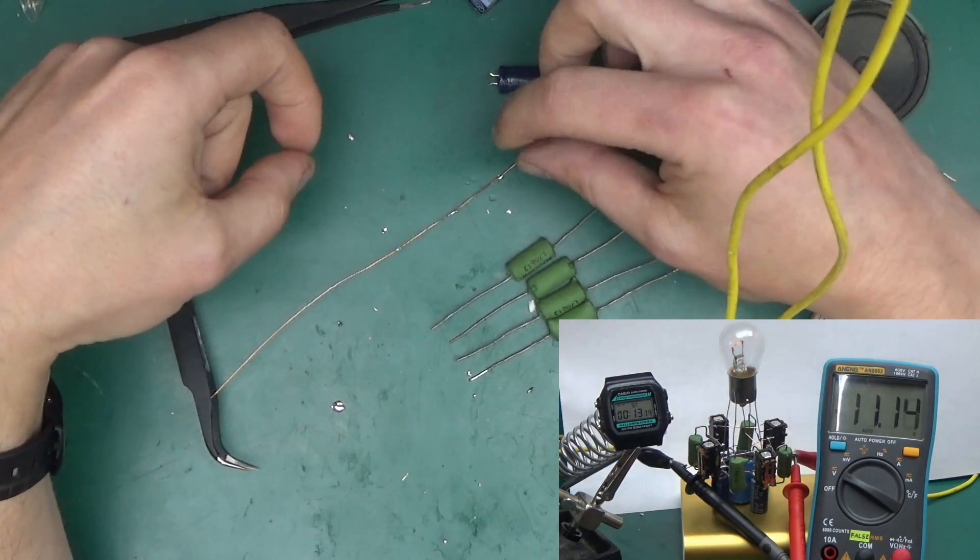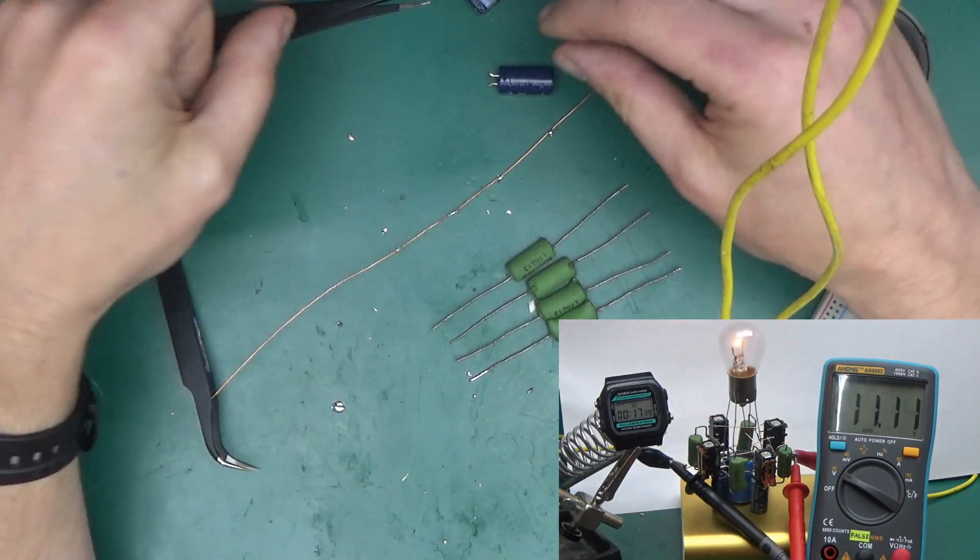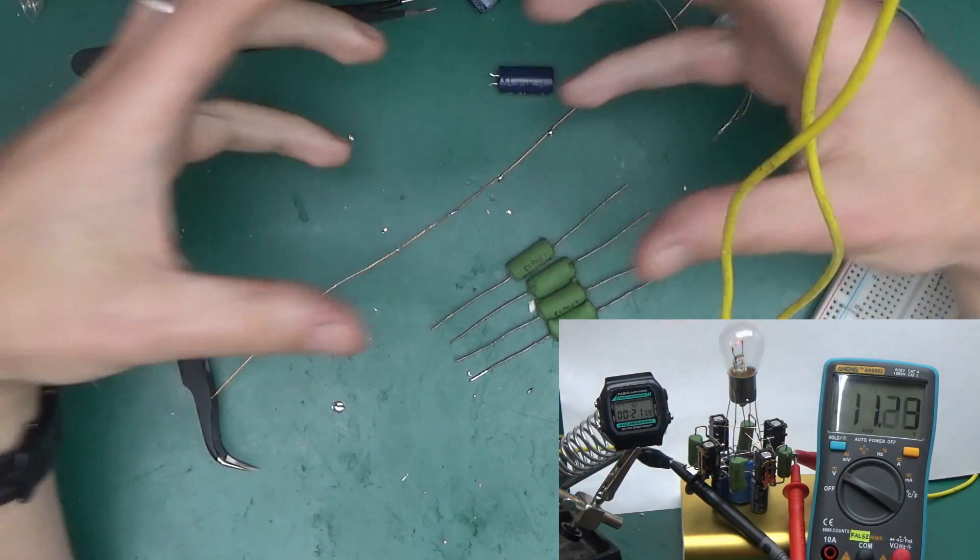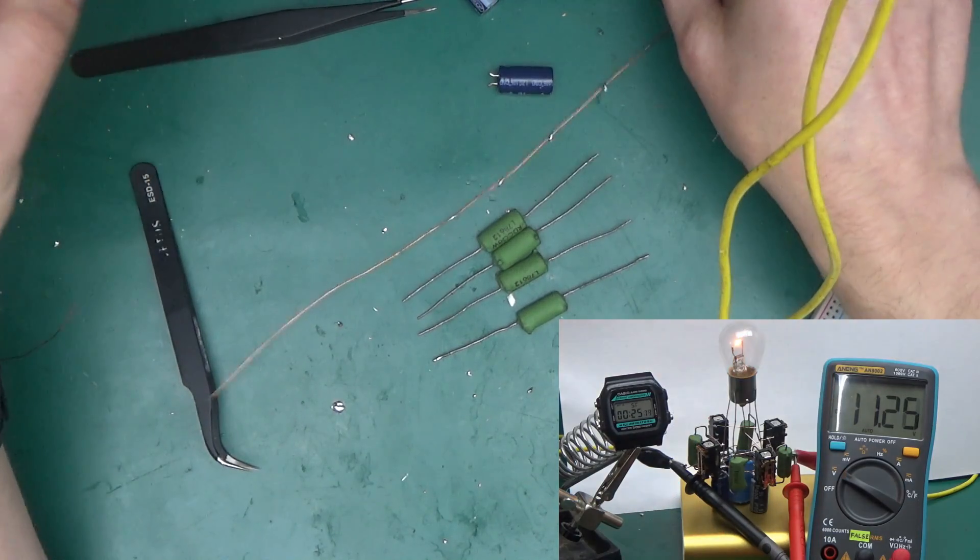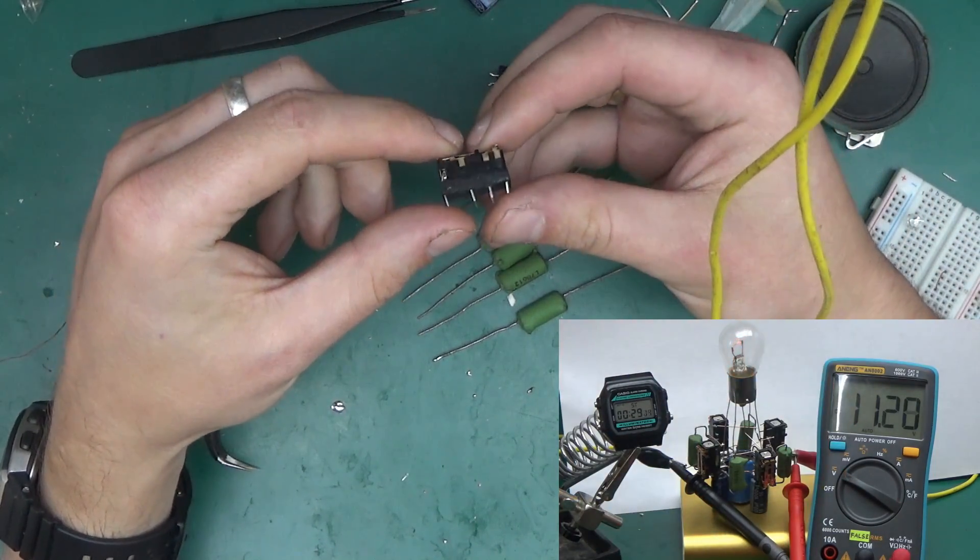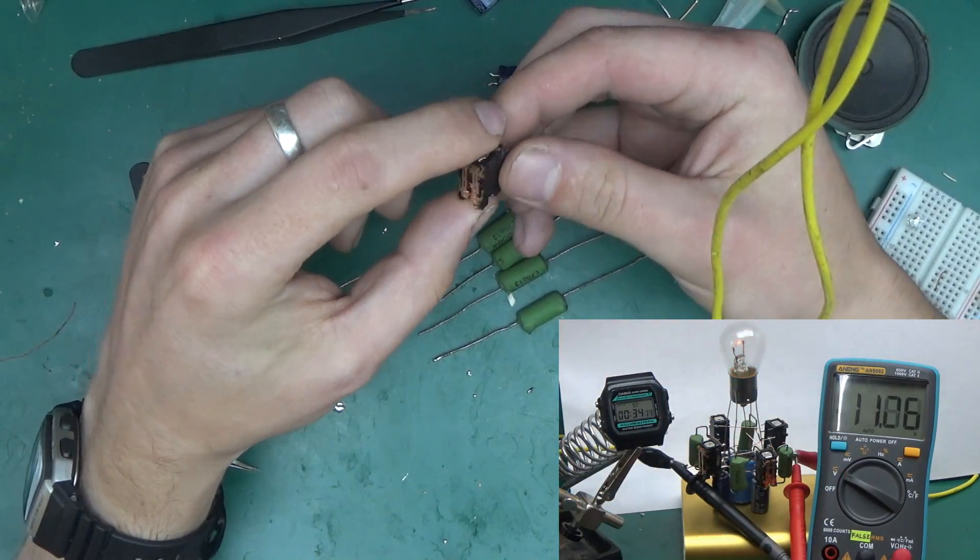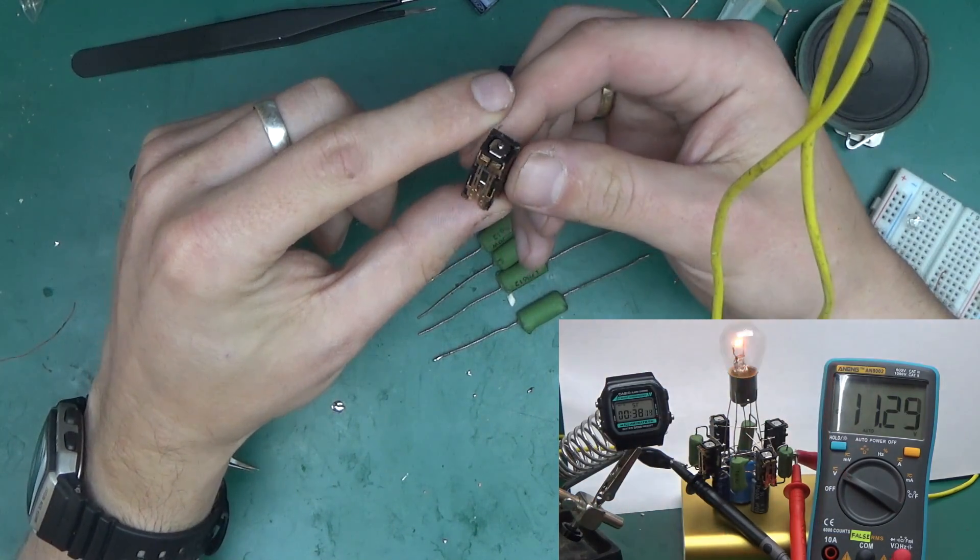I almost started making a PCB for the circuit, but then I thought it would just look too ordinary. So I've decided to build it out of the components in just air, using the components as the structure for everything. And the relays, to make them look a little bit more attractive, I've decided to peel them from the outer casing which will expose the moving contacts. So this should make them look better and make them sound a little bit better while operating.